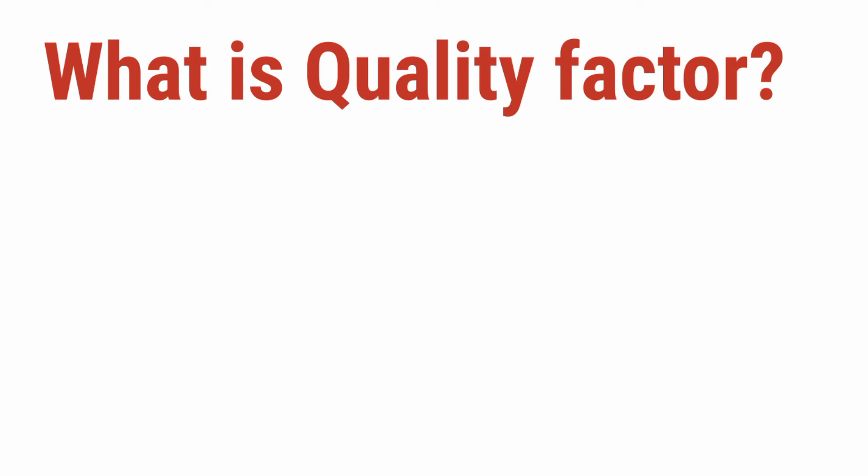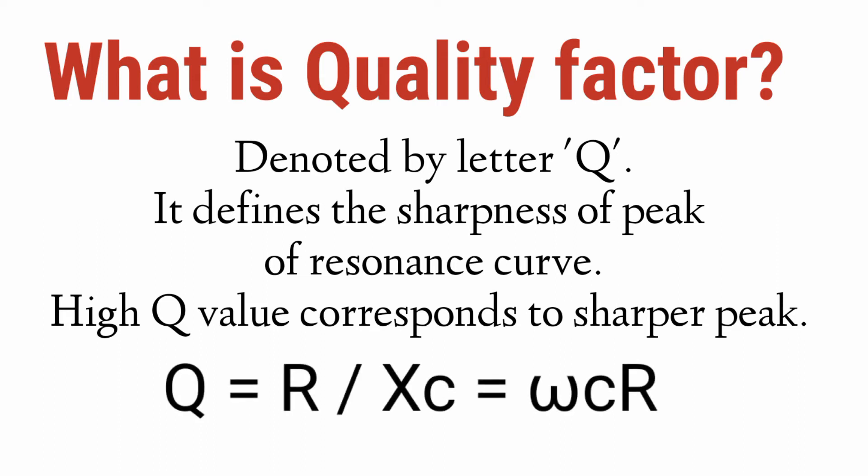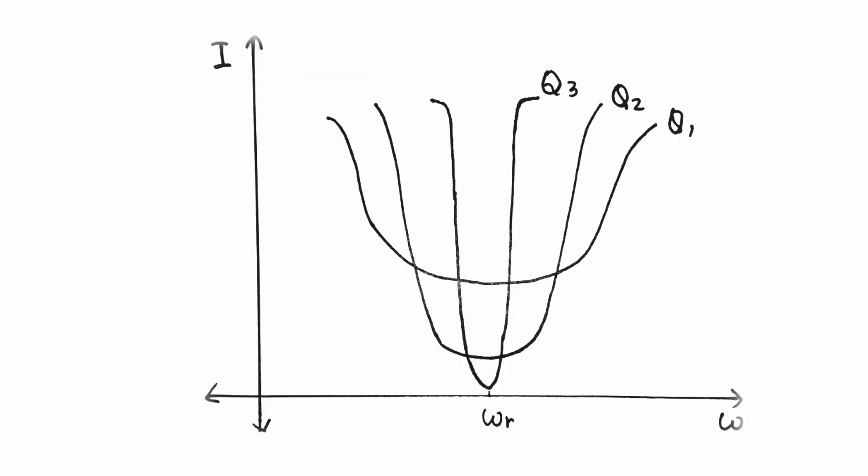What exactly is quality factor? It is denoted by Q. The quality factor defines the sharpness of the peak of the resonance curve — a high Q value corresponds to a sharper peak. Quality factor can be given as R / X_C, which equals ωCR. The graph shows that Q3 > Q2 > Q1, corresponding to progressively sharper curves.